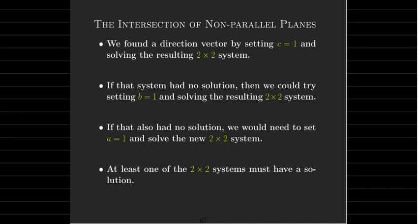At least one of those has to have a solution, because setting c equal to 1 is equivalent to assuming c does not equal 0. Setting b equal to 1 is equivalent to saying b does not equal 0, and setting a equal to 1 is equivalent to saying a cannot equal 0.